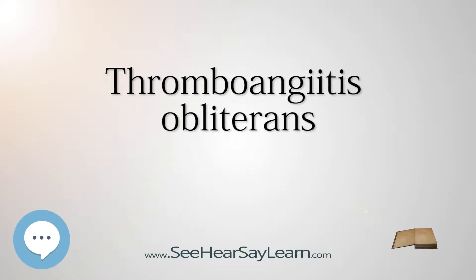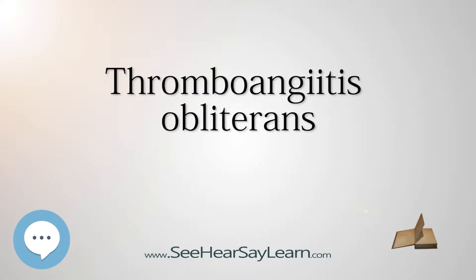Thromboangiitis obliterans, also known as Buerger's disease, is a recurring progressive inflammation and thrombosis (clotting) of small and medium arteries and veins of the hands and feet. It is strongly associated with use of tobacco products, primarily from smoking, but is also associated with smokeless tobacco.